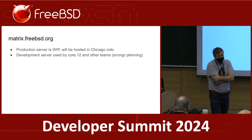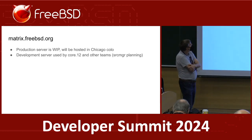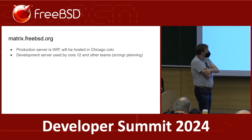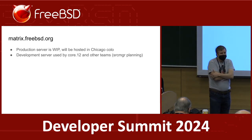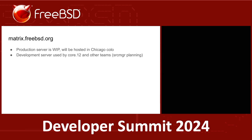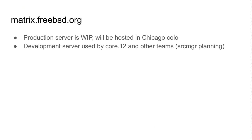Last year we announced a project-sanctioned IM service using Matrix at matrix.freebsd.org. That's been up for over a year. It's still kind of the development instance, but people are using it. Core used it as our main internal communications channel rather than IRC this year, which was helpful — you don't have to deal with everybody losing ops and random bots spamming things in IRC. Other teams including those working on Source Manager have been using it as well.